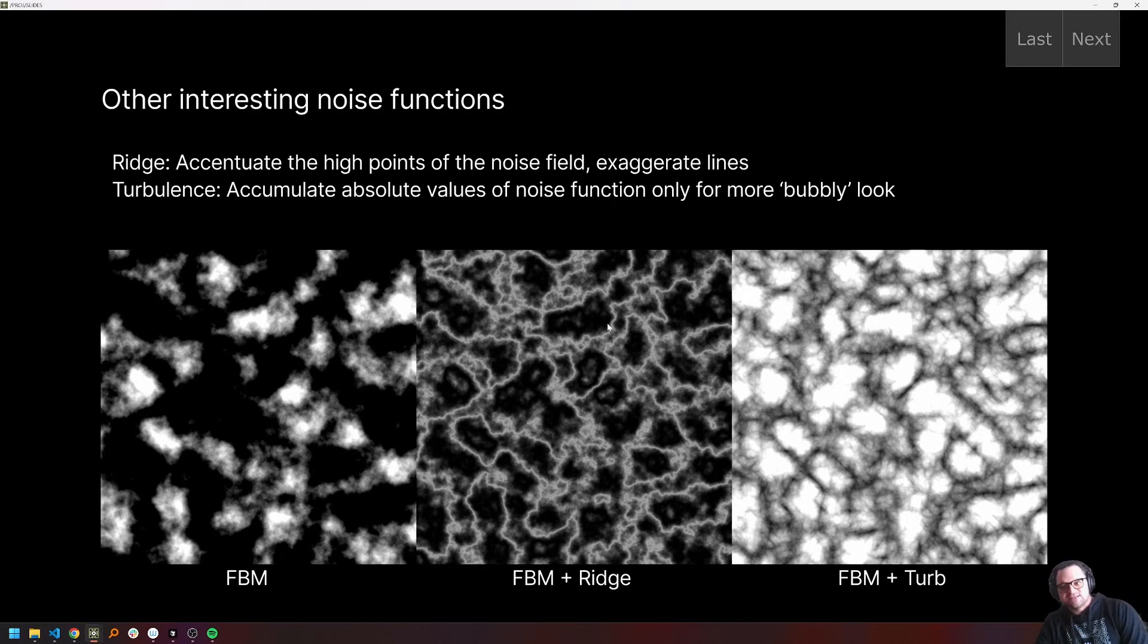And then finally turbulence, which is, I lack of a better term, more bubbly, which we implement by accumulating the absolute values of a noise function instead of possibly positive and negative real numbers. So those are two kind of noise refinement functions that are pretty fun to play around with and we'll see how to implement each of those in a second.